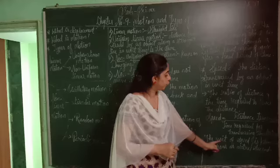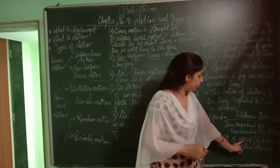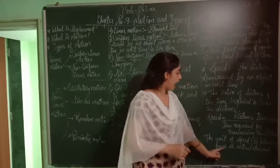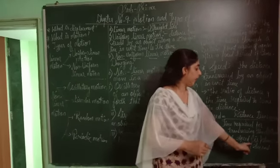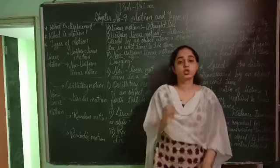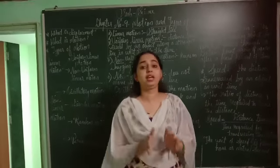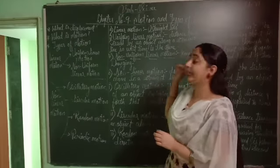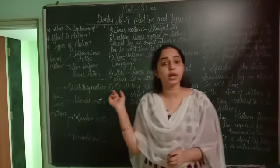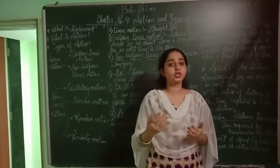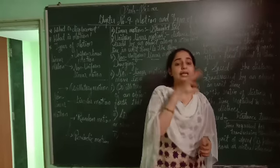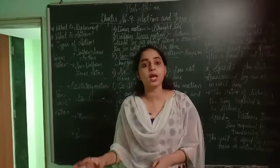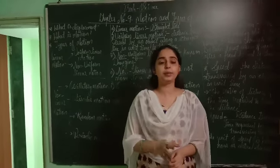The unit of speed is in kilometers per hour or meters per second. Today we have discussed about motion and types of motion. We have different types of motion and each type of motion has its own particular examples.